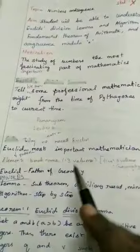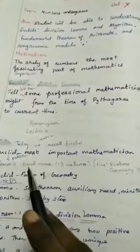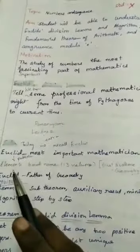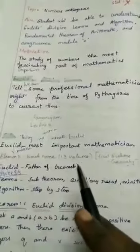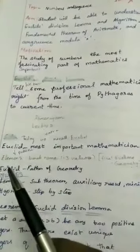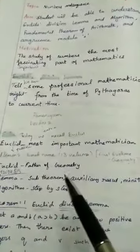Today we recall Euclid, the most important mathematician. He published the book Elements, which has 13 volumes. Euclid is called the father of geometry.